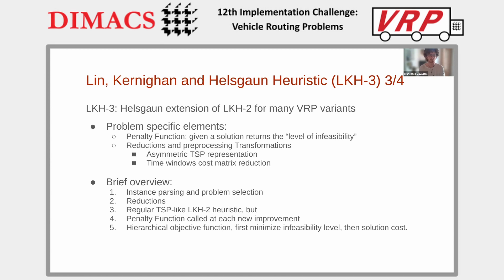A brief overview of the algorithm: initially, it starts by parsing the instance in TSPLIB format and the correct problem is selected. The related reductions are applied if any, and then an optimization scheme, like the regular LKH2, starts — with the only difference that at any new potential improvement, the penalty function is called to assess the level of infeasibility.